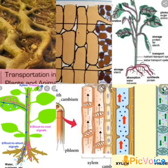Xylem is a network of tubes present in a plant that transports water and minerals from the root to different parts of the plant. There is another network of tubes known as phloem, which helps in the transportation of prepared food from leaves to different parts of the plant. They are conducting tissues, also called vascular tissues, as they are present in special structures called vascular bundles.